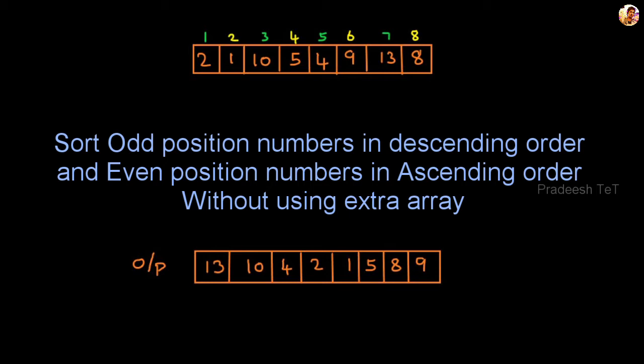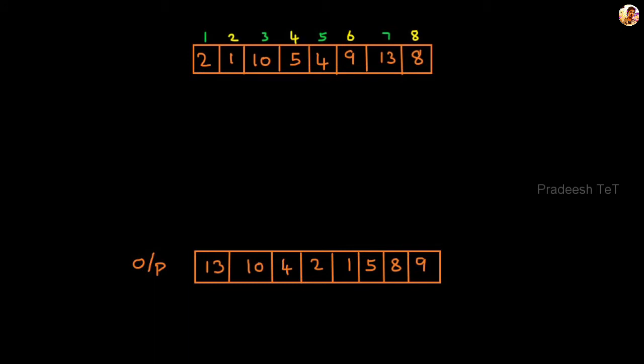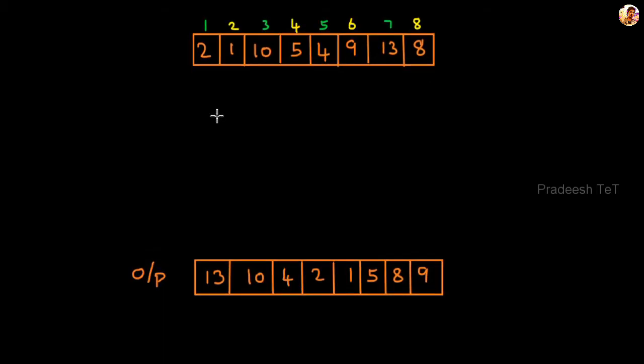Now we are talking about index 0. You can add index 0 — it's neither odd nor even. So, the odd positions are in ascending order. We are talking about positions 1, 3, 5, 7 — we will use a color code. The odd positions 1, 3, 5, 7 — we sort those numbers. The even positions, we will sort all the numbers in descending order. So, the odd position elements — that is 2, 10, 4, 13 — we put in a temporary array.